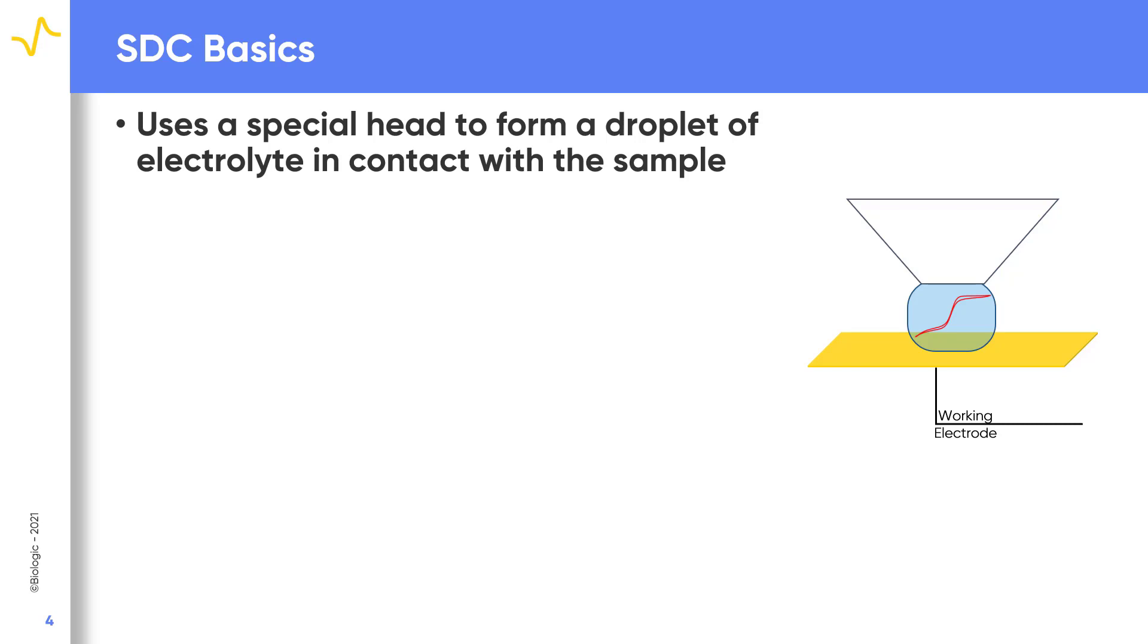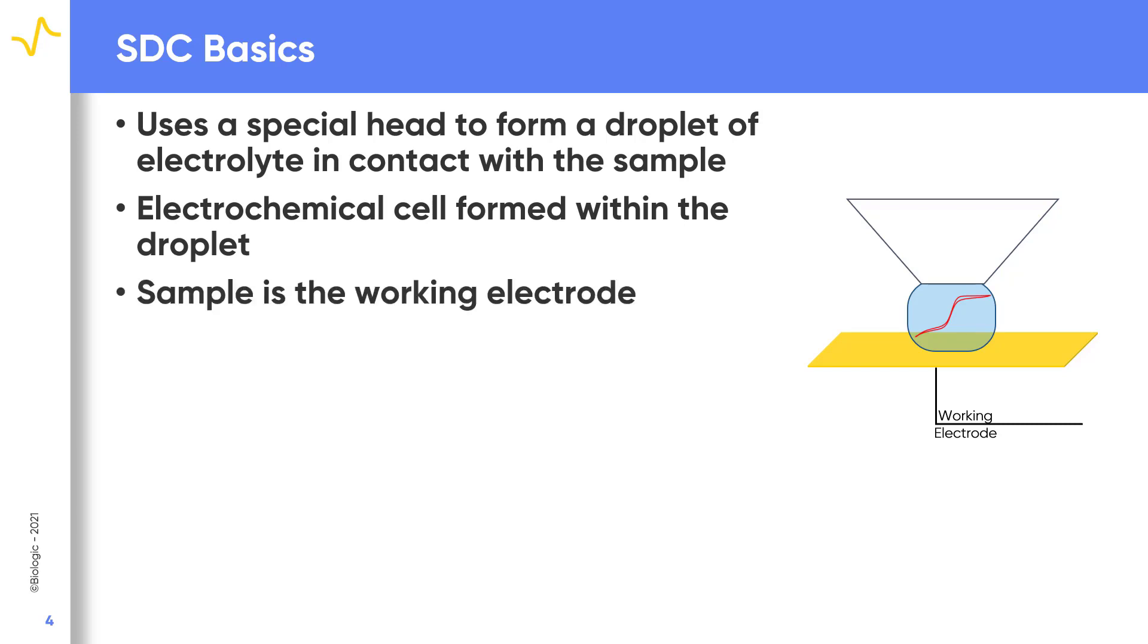A special head is used to allow this droplet of electrolyte to form with the sample. The electrochemical cell is then formed within the droplet. The sample acts as the working electrode which has an area equal to the droplet contact. The counter and reference electrodes are then contained within the head.